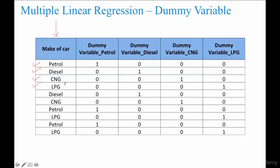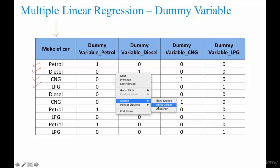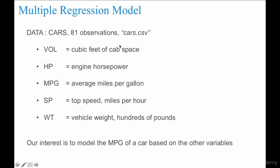For LPG you'll have one for LPG and for the rest of the values you have zero, so on and so forth. This is how you create dummy variables. And here is the dataset based on which we are going to build multiple linear regression.